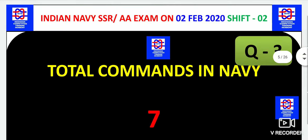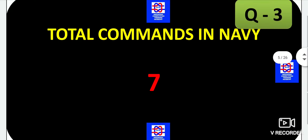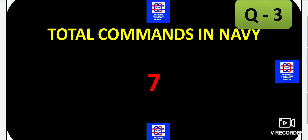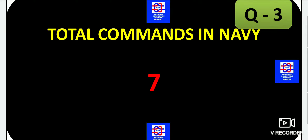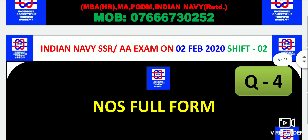Next it is asked how many total commands we have in the Navy — we have about seven. NHQ is one headquarters, and we have the Western Naval Command, Eastern Naval Command, Southern Naval Command, and various other commands. So we have a total of seven.